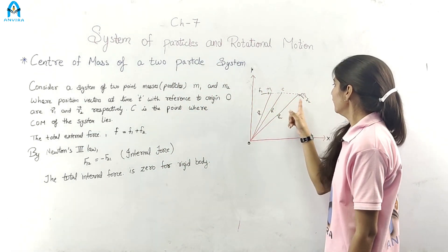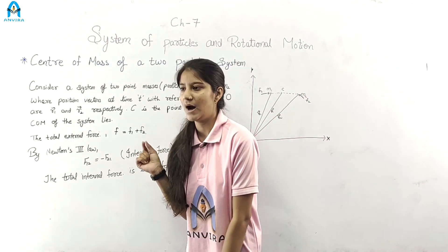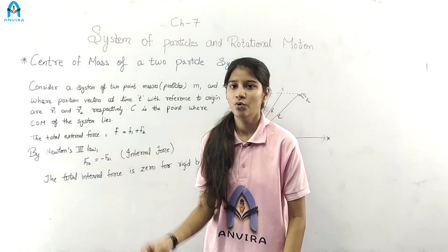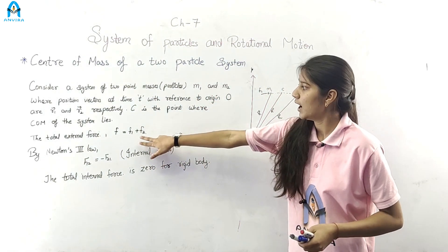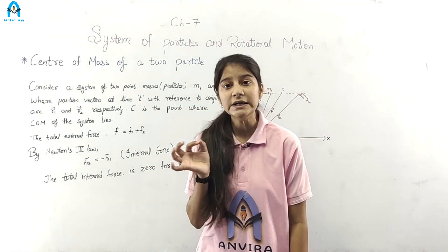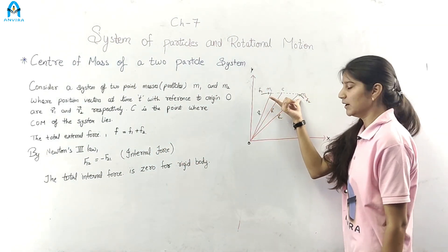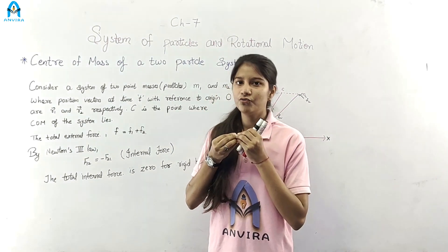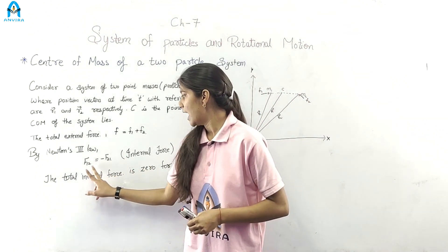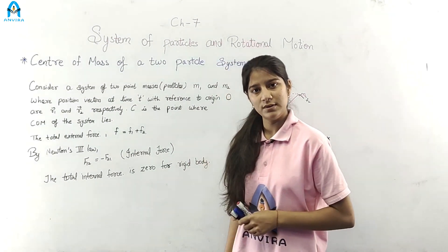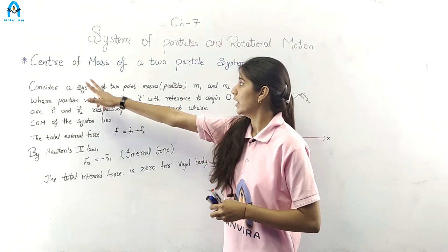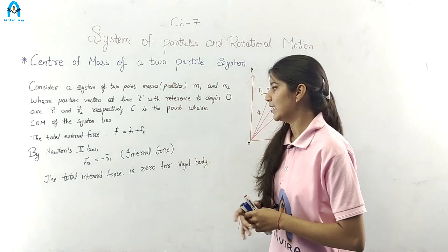We are applying external forces F1 and F2 at the particles. The total external force F is given by F1 plus F2. By Newton's third law, F12 is equal to F21 — those are the internal forces of the particles. For a rigid body, the total internal force is zero, meaning F21 plus F12 equals zero.